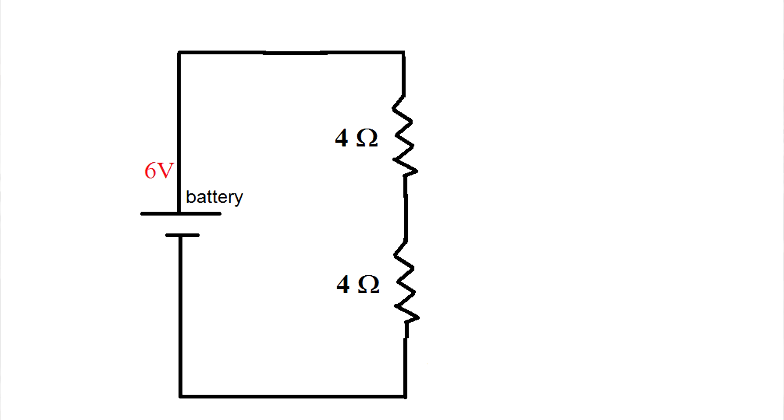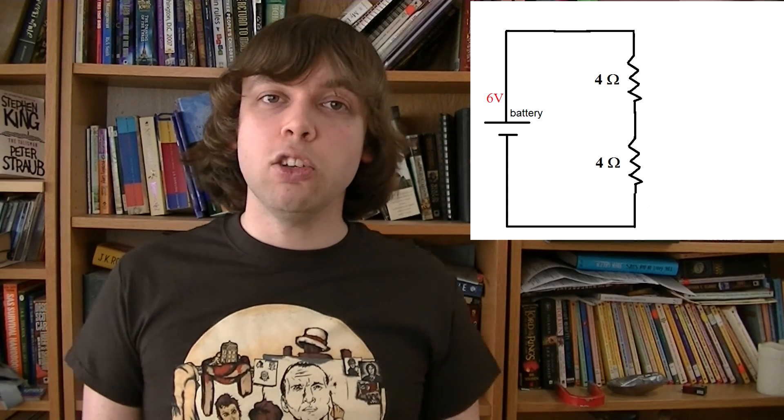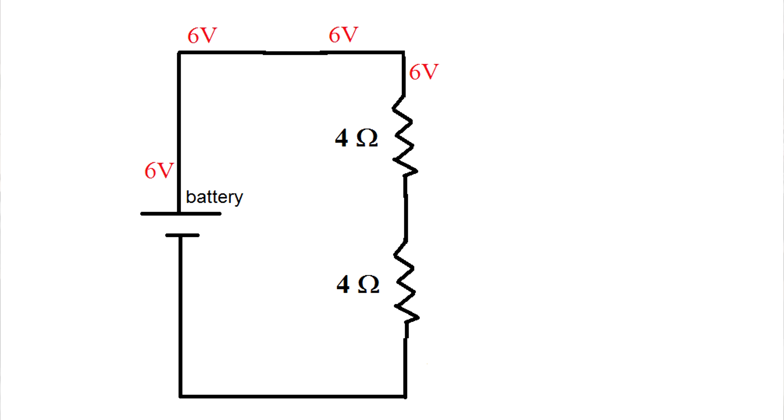So in this case, you start out with six volts. So in this series circuit, if these resistors are just as strong as each other, each one will use up three of the six volts. So we'll start with a potential of six volts, in the middle we'll have three volts, and once you've gone through both resistors, we'll be down to zero volts. And everywhere past that resistor will have a potential of zero volts.